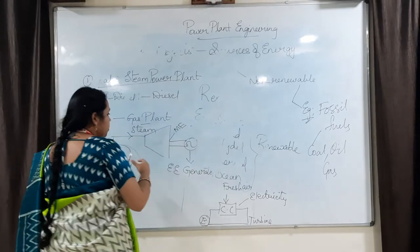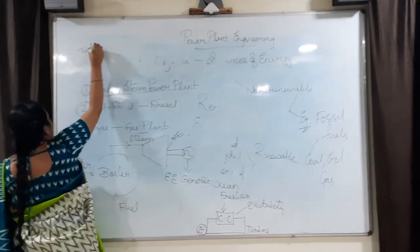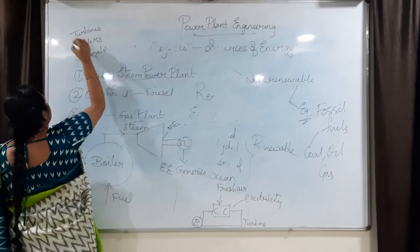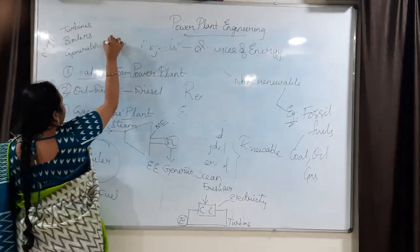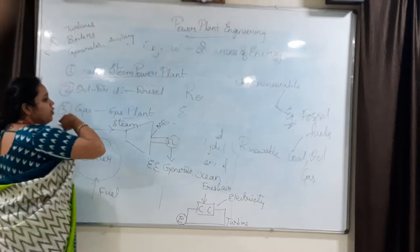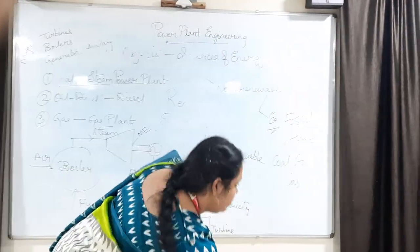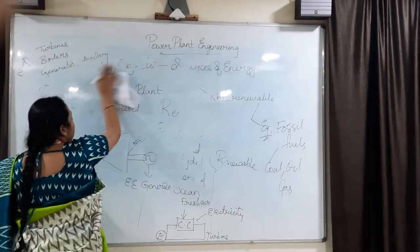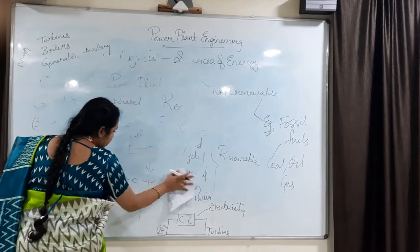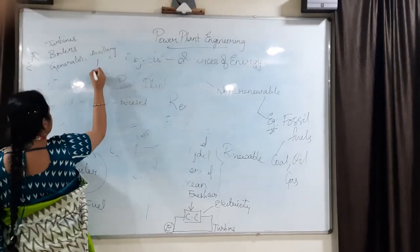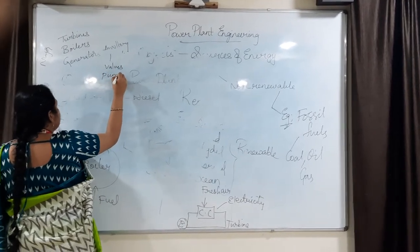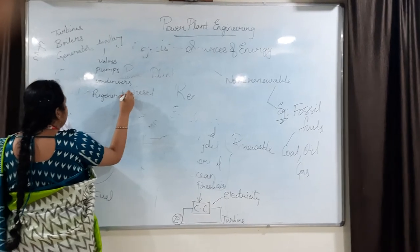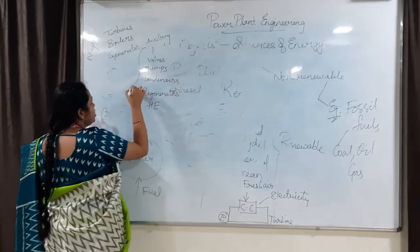In this plant, the main components are turbines, boilers, and generators. These come under major components. Coming to auxiliaries — these are the extra systems used to transfer energy from one component to another and to get the output. These auxiliary systems include valves, pumps, condensers, regenerators, and heat exchangers.